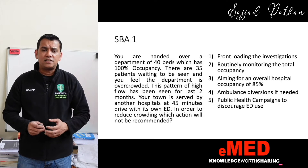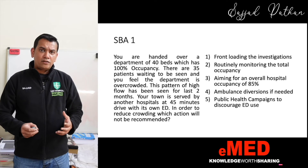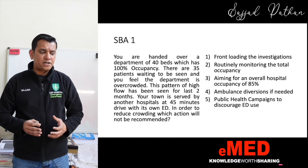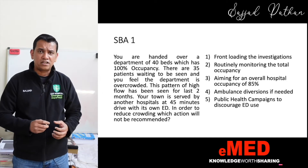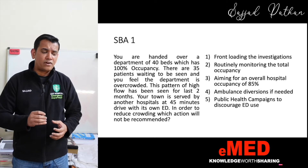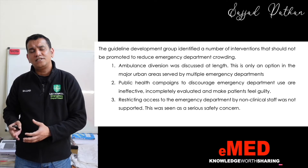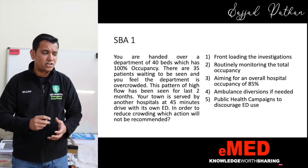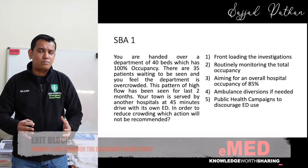The options are: front-loading investigations, routinely monitoring total occupancy, aiming for overall hospital occupancy of 85%, ambulance diversions if needed, and public health campaigns to discourage ED use. The correct answer is option five — public health campaigns to discourage ED use. Research has shown that many people feel guilt about using the system, and when they have a genuine emergency, they tend to avoid coming to the ED. Therefore, public health campaigns to discourage ED use are not recommended. The rest are all recommended.